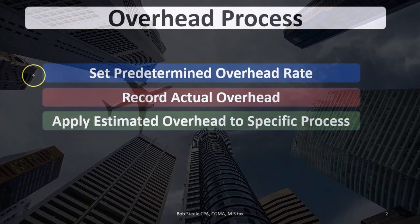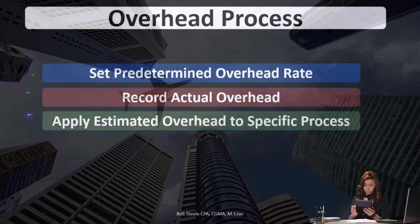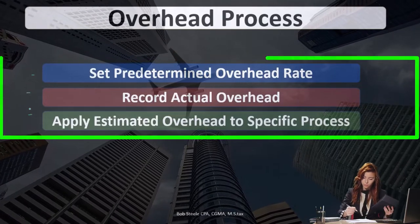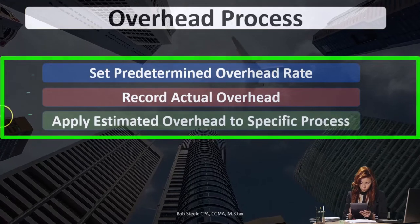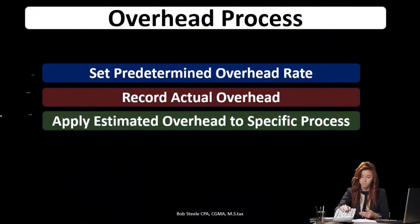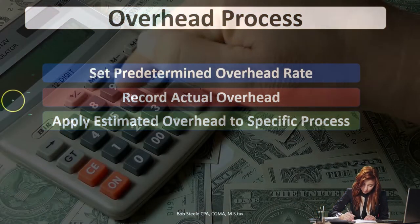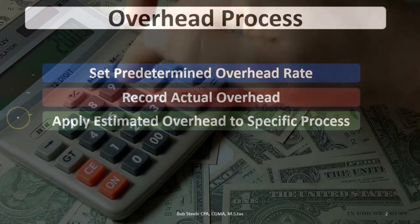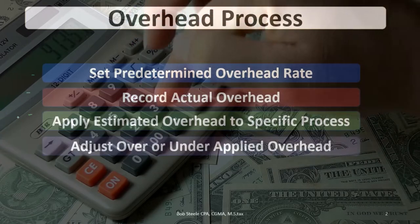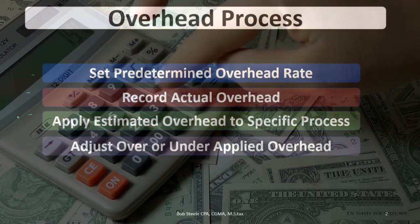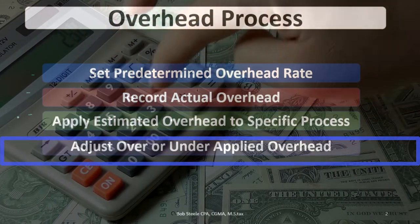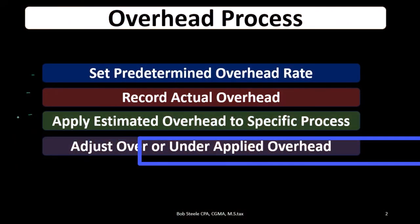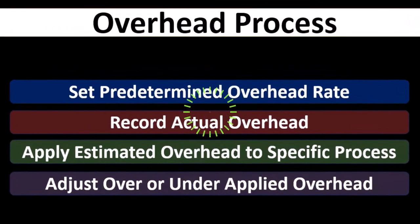Because it is only an estimate, these two items — actual and applied — will not match oftentimes. In a perfect world we could apply out the actual overhead, but where there isn't perfect ordering we have to use some type of estimate. That means the actual overhead will not be the same as the amount applied out, and therefore we will have to deal with under or over applied overhead and adjust for that.